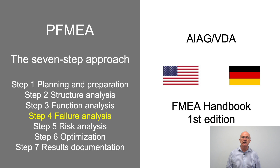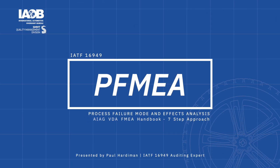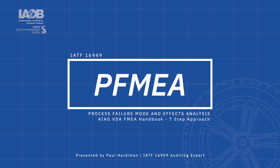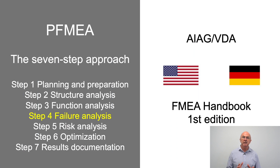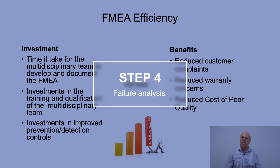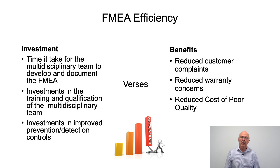This video looks at developing a process FMEA using the seven-step approach of the AIAG VDA FMEA handbook, first edition. Today we're focusing on step four, failure analysis. Let's do a quick recap on what we've covered in steps one, two, and three, and hopefully you've remembered the focus in the new manual about FMEA efficiency.